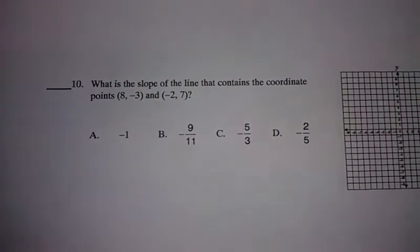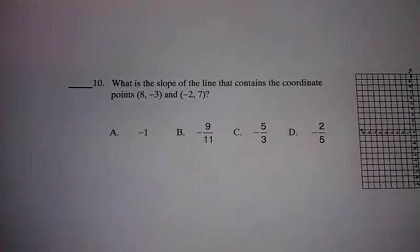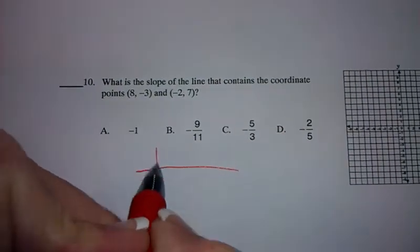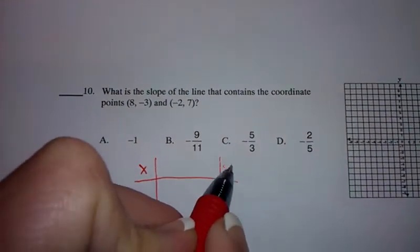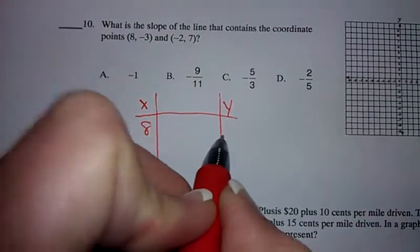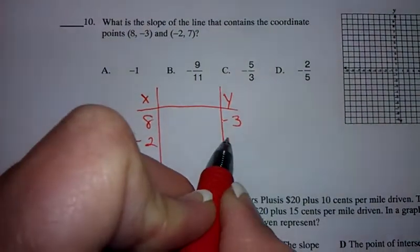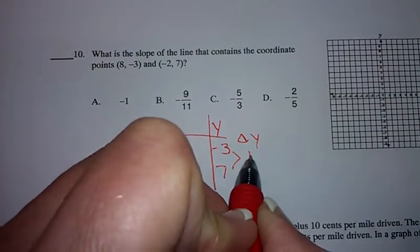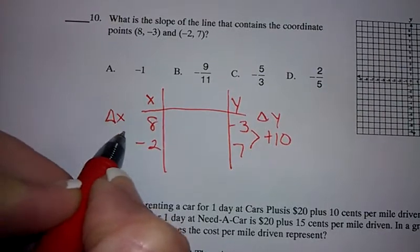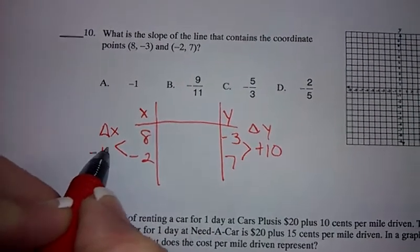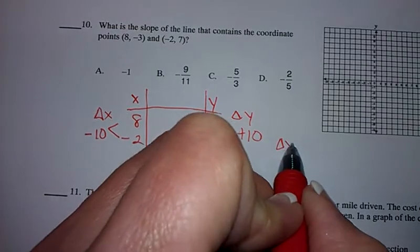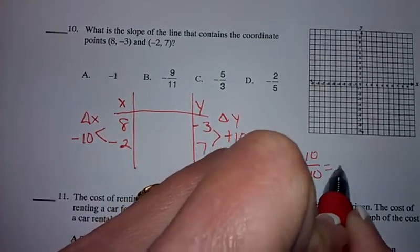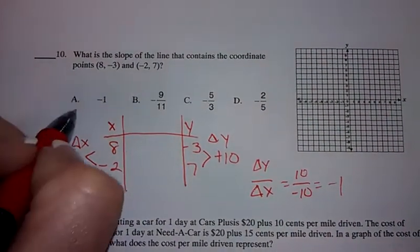The next one, it says what is the slope of the line that contains the points 8, negative 3 and negative 2, 7? Well, you can graph it if you want to. I'm going to build a table and do delta y over delta x. I have 8, negative 3 and negative 2, 7. Delta y, well, this is plus 10. Delta x, the change in x, that's minus 10. So then to find the slope, it's delta y divided by delta x. 10 over negative 10, which is negative 1. My answer is A.